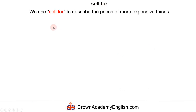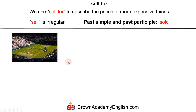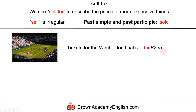Sell for. We use sell for to describe the prices of more expensive things. Sell is also irregular — the past simple and past participle are sold. Tickets for the Wimbledon final sell for 255 pounds. Here we are using the present simple, so we are describing the usual price in general.